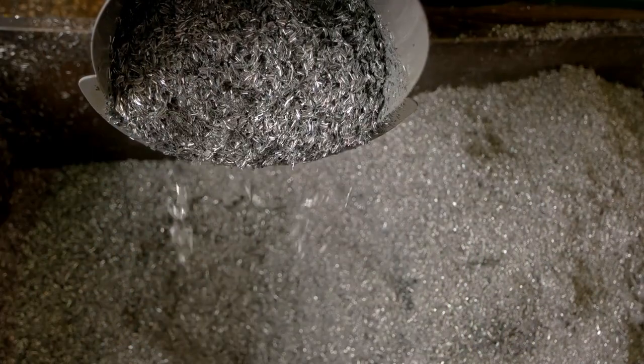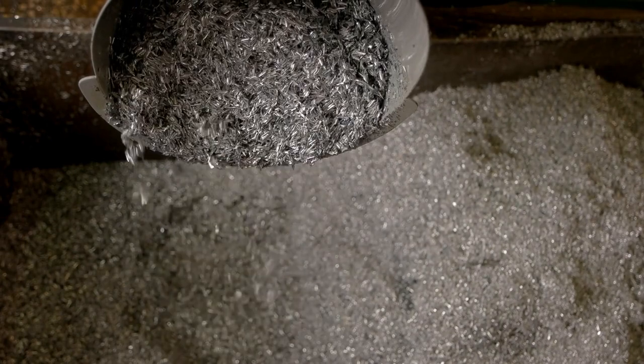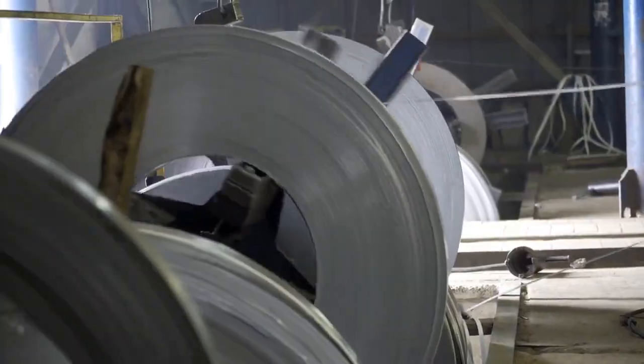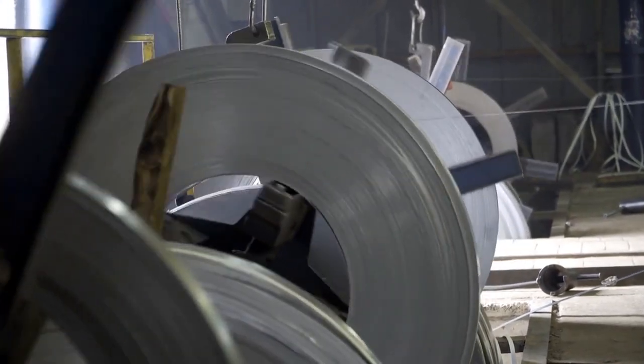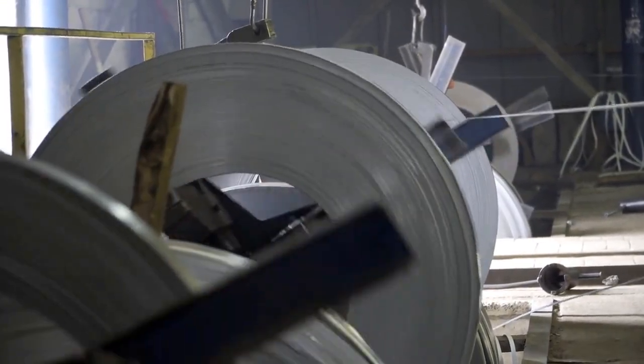These bales are then sent to a cutter and a melter, where the aluminum is melted down and formed into new sheets. The new sheets of aluminum can then be used to make new cans, which means that the material can be reused again and again without losing quality or performance.